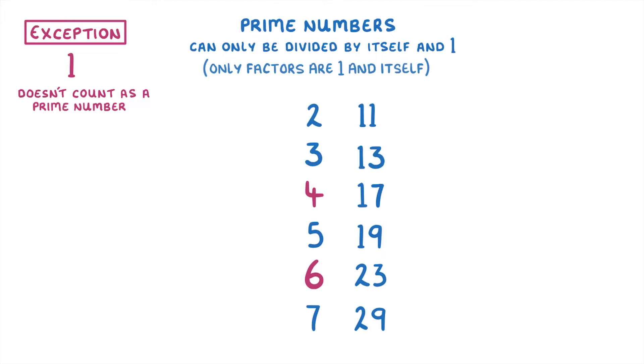One thing you might have noticed is that two is the only even prime number. This is because all other even numbers are divisible by two, which means that they can't be prime.